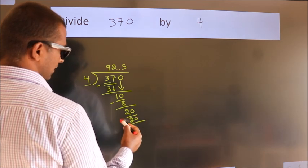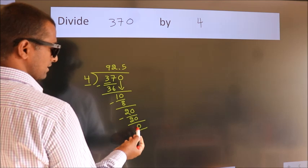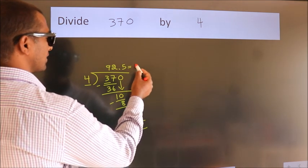Now we subtract. We get 0. We got remainder 0. So this is our quotient.